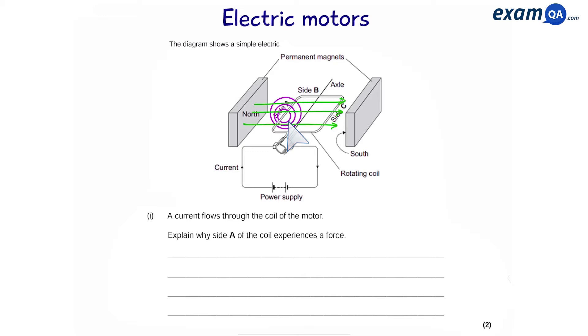When this happens, this creates a force. So number one, a current in the coil produces a magnetic field. This interacts with the magnetic field of the permanent magnet, creating a force in the wire.